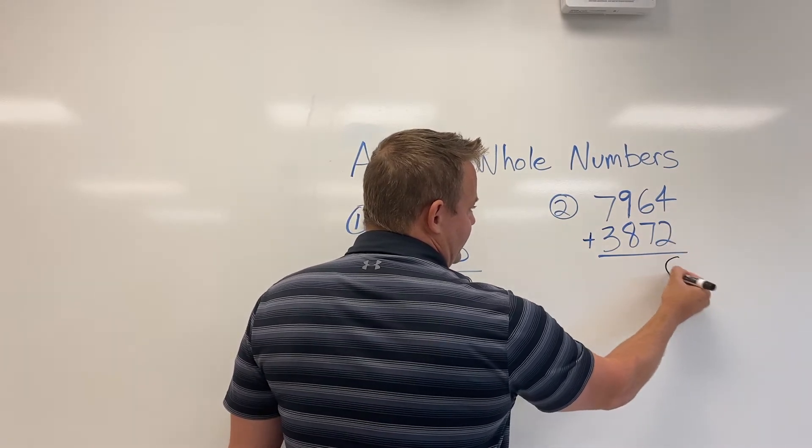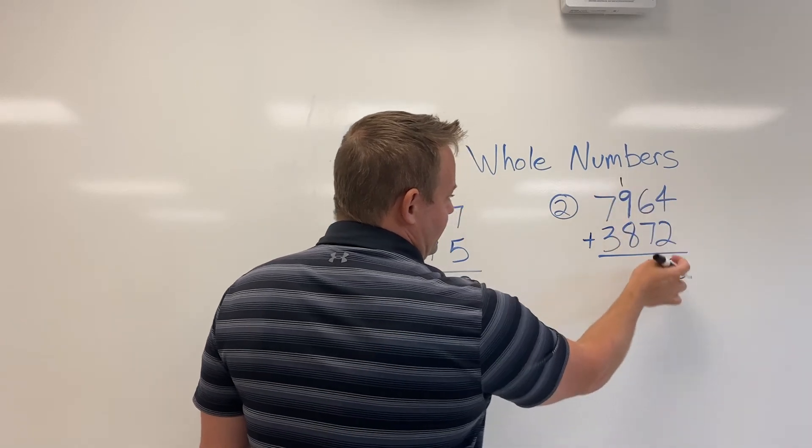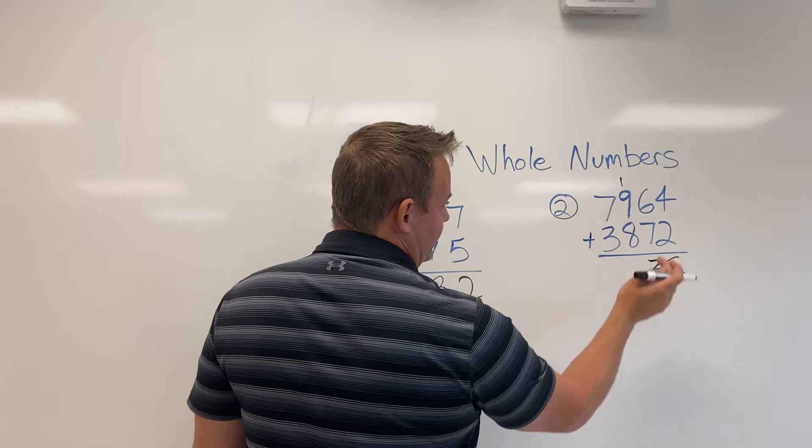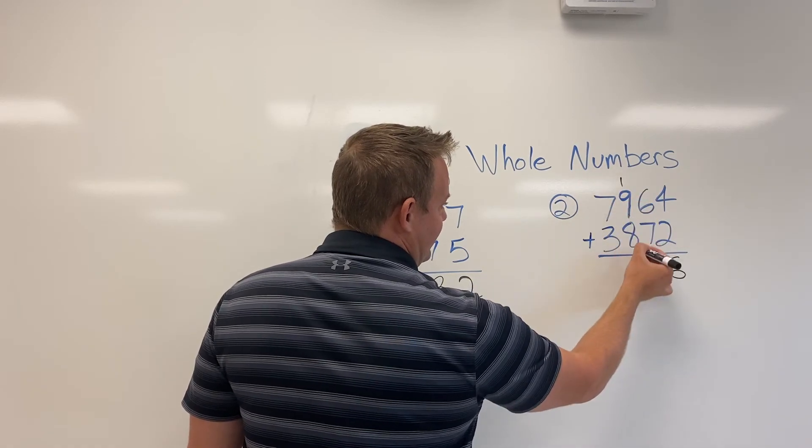We have four plus two is six. Six plus seven is 13. And notice the ones places here and we carry up here. One plus nine is 10 plus eight is 18.